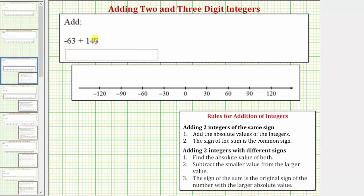Now let's find the exact sum using the formal rules for adding integers. And because we're adding a negative and a positive, we'll use the rules for adding two integers with different signs. Step one, we find the absolute value of both integers.